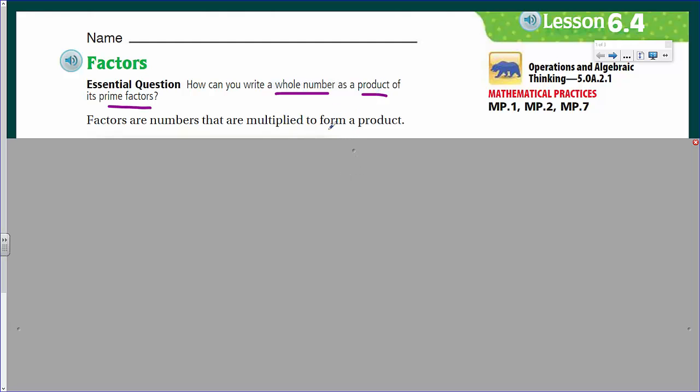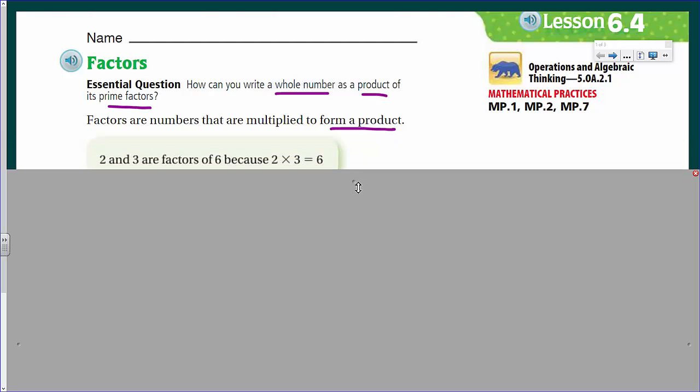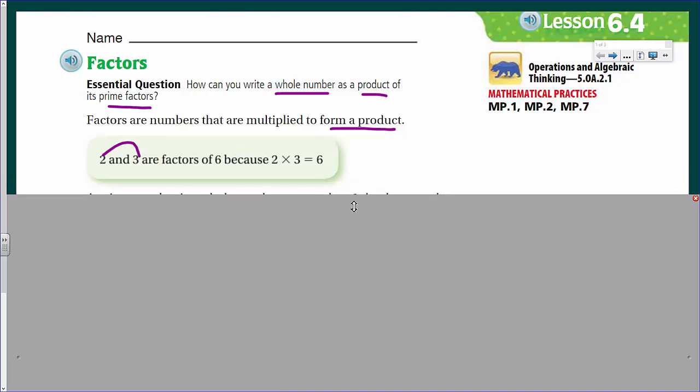Product. Here we just learned that factors are numbers that are multiplied to form a product. So it's almost like the answer of a multiplication problem. And of course, prime factors. We're going to talk about what prime factors are. But first, let's take a look at just what our factors are. Factors then, 2 and 3, are factors of 6 because 2 times 3 is 6. Pretty simple, I would say.